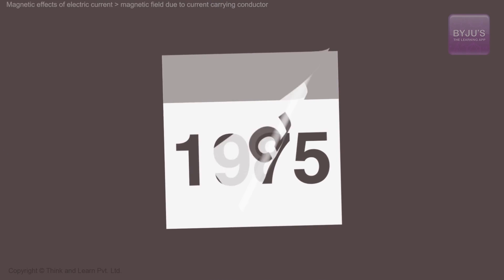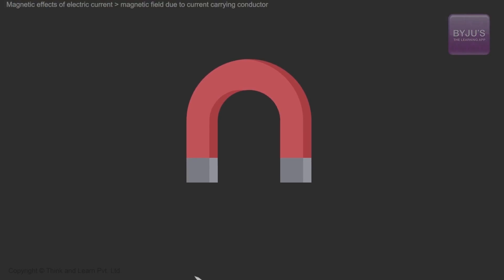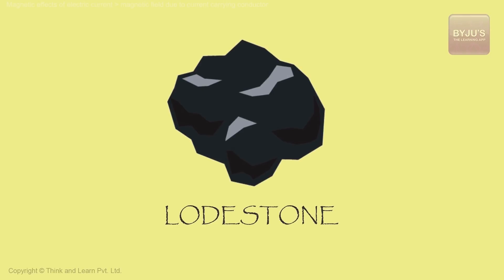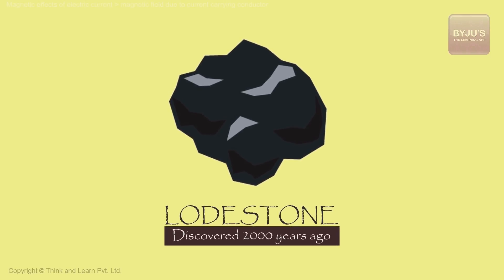For years and years, we have known that magnets attract other magnetic objects, what is called the lodestone. It's been known for about 2000 years.